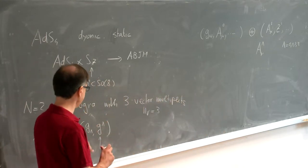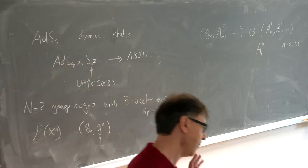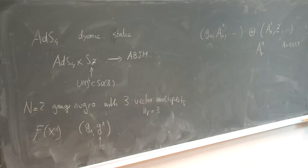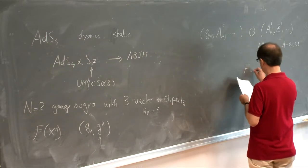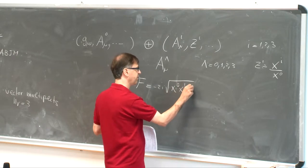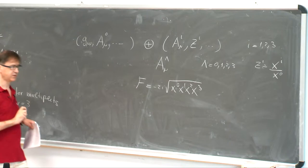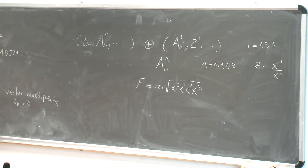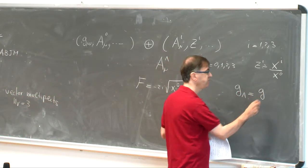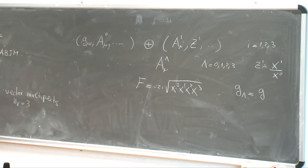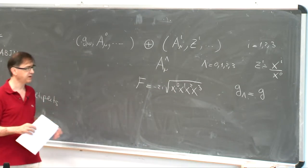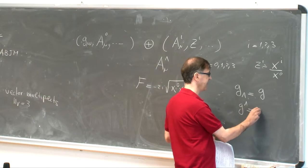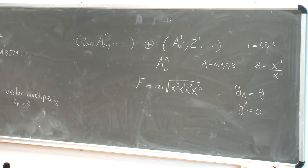In this truncation, luckily enough, there is a frame where you can use only electric Fayet-Iliopoulos couplings. For those who know a bit about symplectic transformations, there is a natural frame where you just use electric Fayet-Iliopoulos. And indeed, you can find in the literature that the prepotential is this square root that already appeared in Stefan's lecture. The four electric Fayet-Iliopoulos are all equal — I'll call the common value G — equal because there is SO(8) in the original theory. So there are no magnetic Fayet-Iliopoulos.